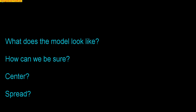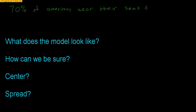Our first problem is going to be very simple. 70% of Americans wear their seatbelt. Sample size matters. Let's say I'm going to take a sample of 85 people, and I want to see what proportion of those 85 people are going to wear their seatbelt. We expect 70%, right? So there are two ways of thinking about this: how many versus what proportion.